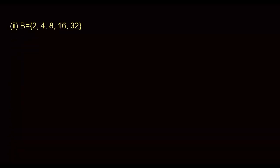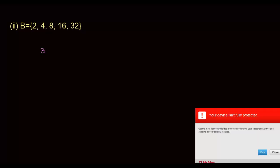For set B = {2, 4, 8, 16, 32}, you should first try to understand what it represents. Does it represent multiples of 2? Indeed, 2, 4, 8, 16, and 32 are all multiples of 2 — but how does that fit into a clean pattern?